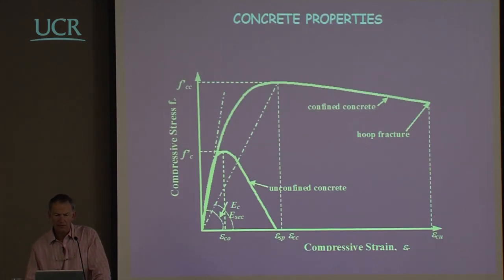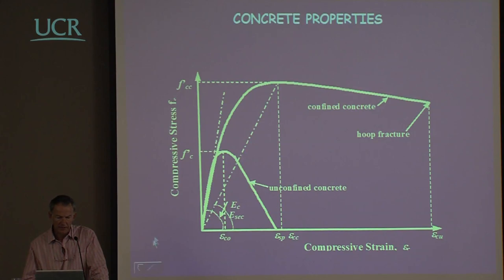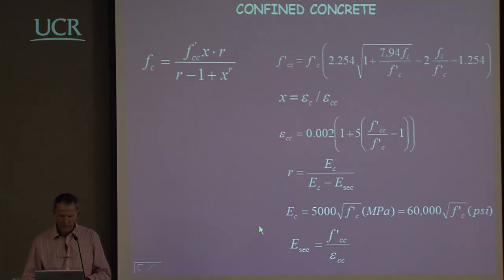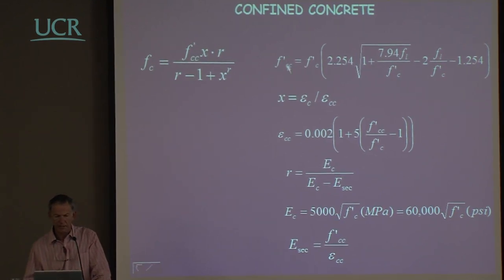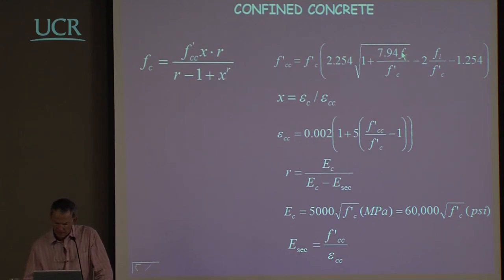Regarding concrete properties for design, we are changing the characteristics of the concrete considerably by confining it in plastic hinge regions. We increase the strength and also increase the usable strain — typically to hoop fracture — by a very considerable amount compared with unconfined concrete. We can write expressions for the confined strength using the Mander et al. expression, which relates confined strength to unconfined strength as a function of the lateral confining pressure exerted by the transverse reinforcement at yield.